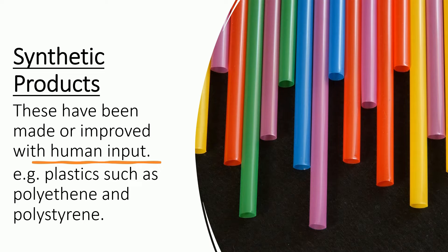The opposite of natural resources are synthetic products. These have been made or improved with human input. For example, plastics such as polyethene and polystyrene have been made by humans in a factory, so they're classed as synthetic products.